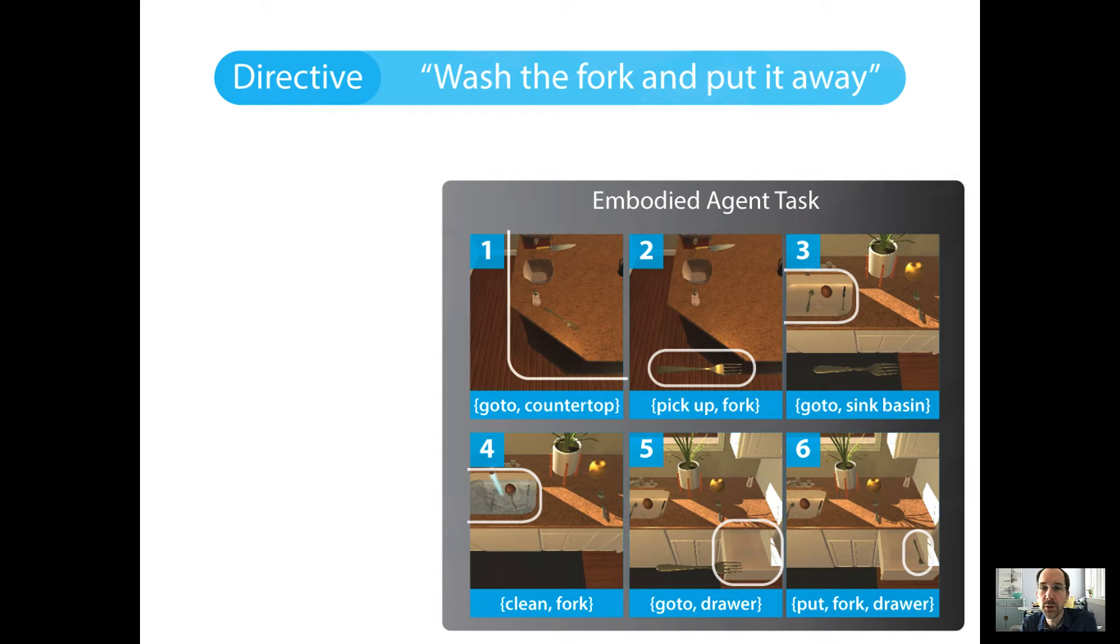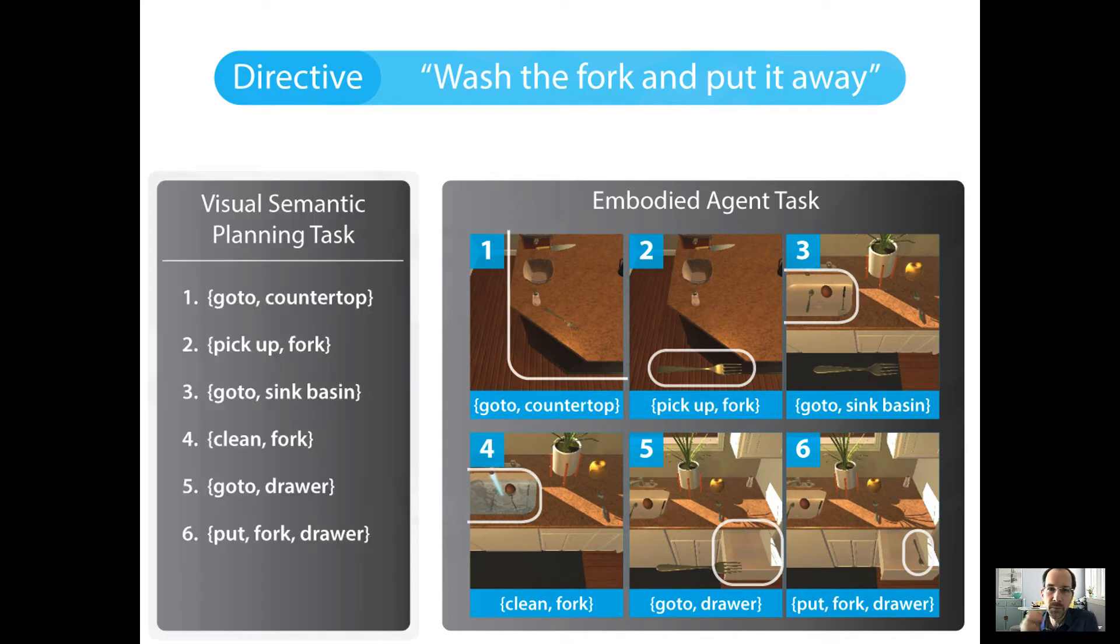A number of frames from one particular kitchen environment is shown here. Inherent in executing that directive in that virtual environment is the subtask of coming up with that series of steps that have to be performed to complete the task successfully. That subtask, the coming up with a series of steps, is called visual semantic planning. The visual semantic planning task, specifically going from that language directive to the visual semantic plan, is what this paper is specifically addressing. As we see here, the visual semantic plan in ALFRED is represented as a sequence of tuples, typically triples. There's a command like go to or pick up or clean, followed by one or two arguments to that action, which are typically objects or receptacles that the objects interact with.